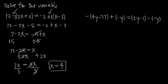Now looking at a second example, we have negative quantity 4y minus 17 plus negative y, equal to the quantity 2y minus 1, minus a negative y. Again, we want to deal with our parentheses first. We have an implied negative 1 in front of the first set, an implied 1 in front of the quantity 2y minus 1, and an implied 1 in front of the negative y.